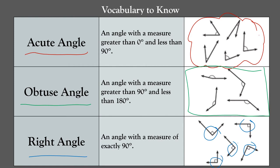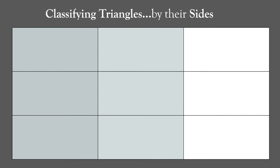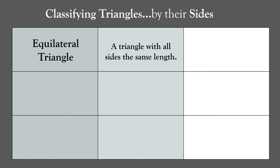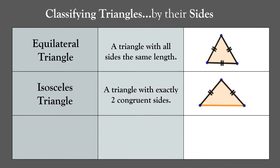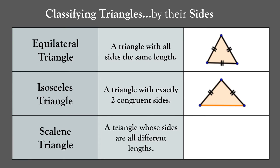There are two different ways to classify triangles: by their sides and their angles. First, let's classify triangles by sides. An equilateral triangle has all sides the same length. An isosceles triangle has exactly two congruent sides — congruent means the same or equal. A scalene triangle has sides that are all different lengths, so no sides are congruent.